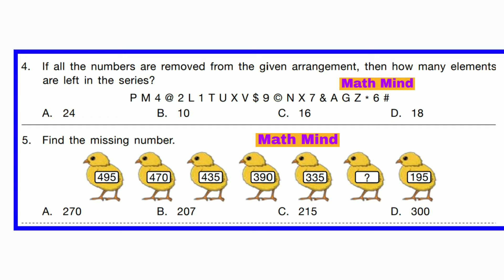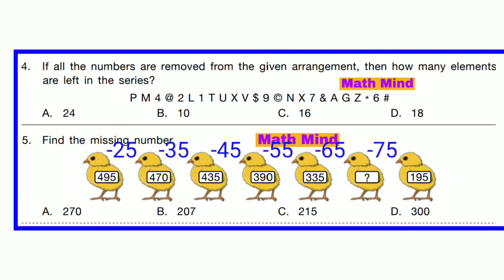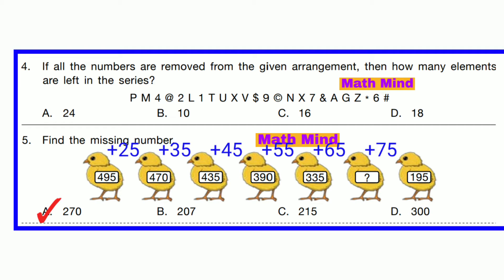Question number 5. Find the missing number. Numbers are given: 495, 470, 435, 390, 335, blank, and 195. If we proceed from left to right, numbers are decreased in this pattern. When we proceed from right to left, numbers are increased in this pattern. So option A is correct: 270. 195 plus 75, we get 270.